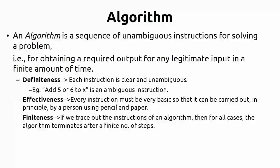The third property is finiteness. Finiteness means that if we trace out the instructions of an algorithm, for all cases the algorithm terminates after a finite number of steps. Whatever constraints or cases you take, the algorithm must terminate. If for some constraint it does not terminate, you cannot call it an algorithm. For all cases it must terminate in a finite amount of time — it must never go into an infinite loop.